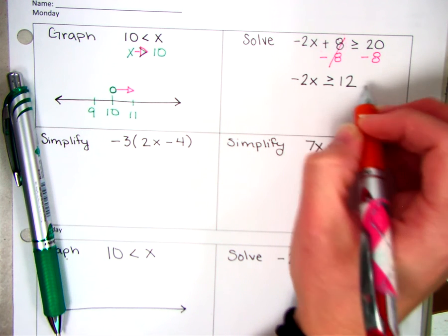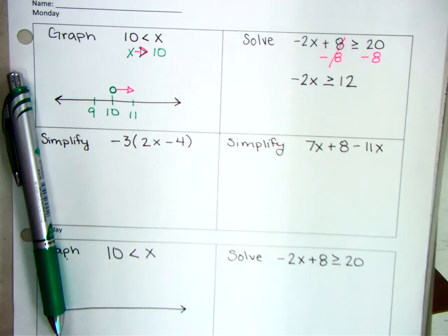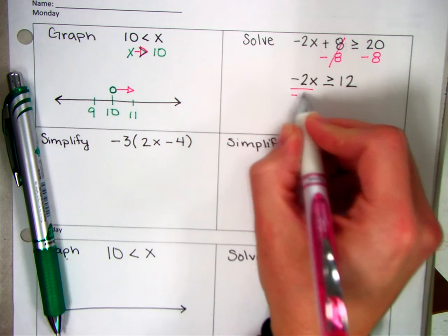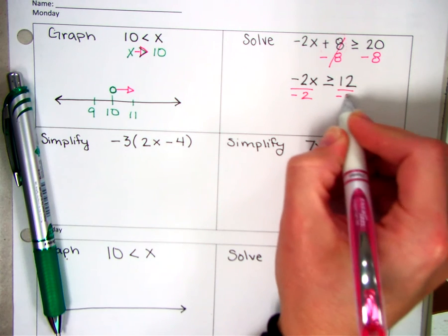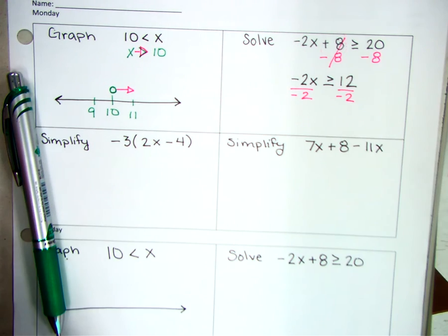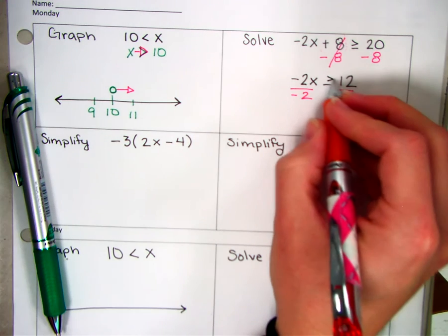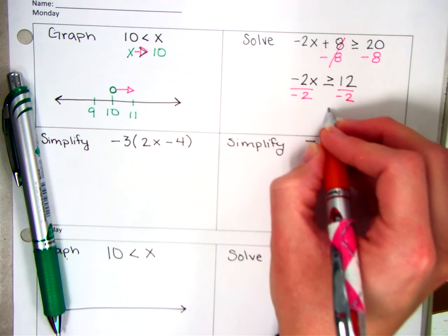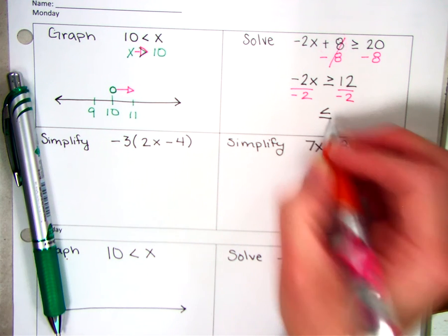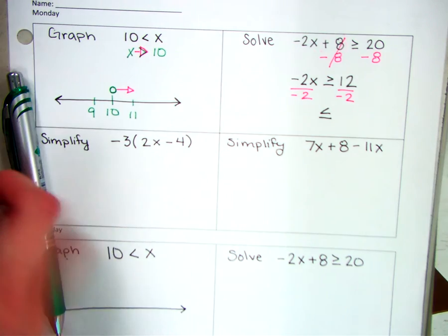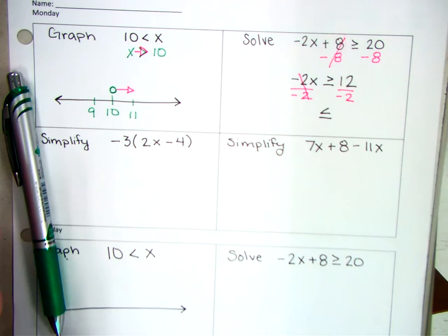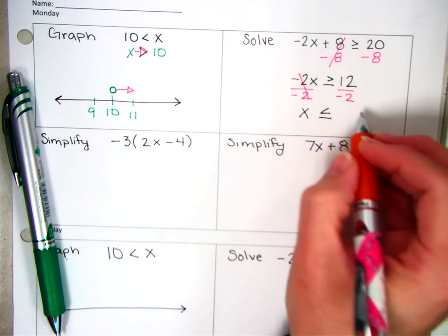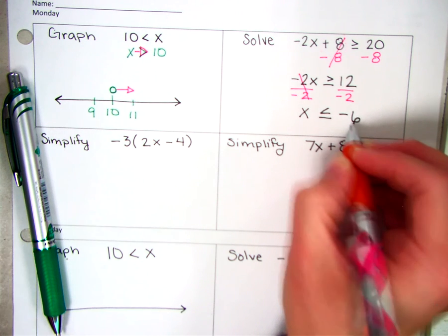Greater than or equal to 20 minus 8 is 12. Okay, and this is something that we talked about last week, and last Friday we played bingo to solidify the fact that when I divide by a negative 2, what do you have to remember to do? Flip this symbol. Right now it is a greater than or equal to, and it will flip to a less than or equal to symbol. Okay, these negative 2s will cancel out. So I have x, 12 divided by negative 2 is negative 6.